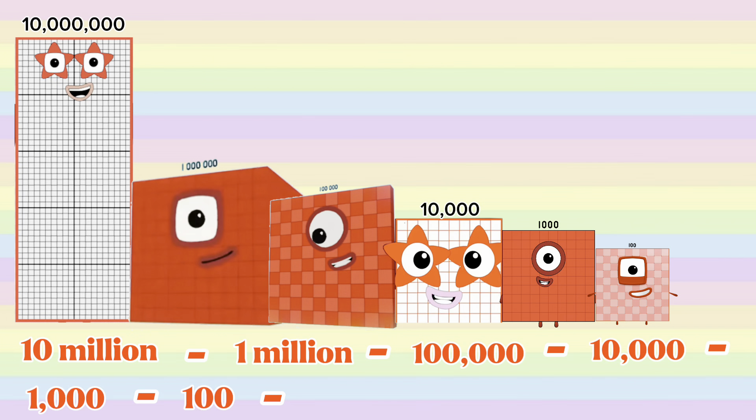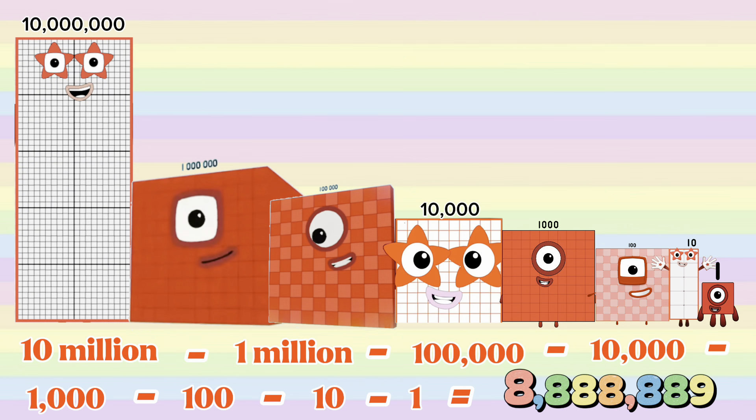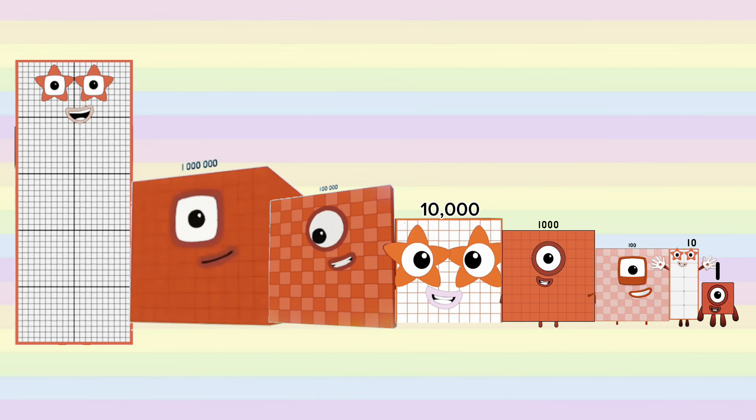10 million minus 1 million minus 100,000 minus 10,000 minus 1,000 minus 100 minus 10 minus 1 equals 8,888,889.